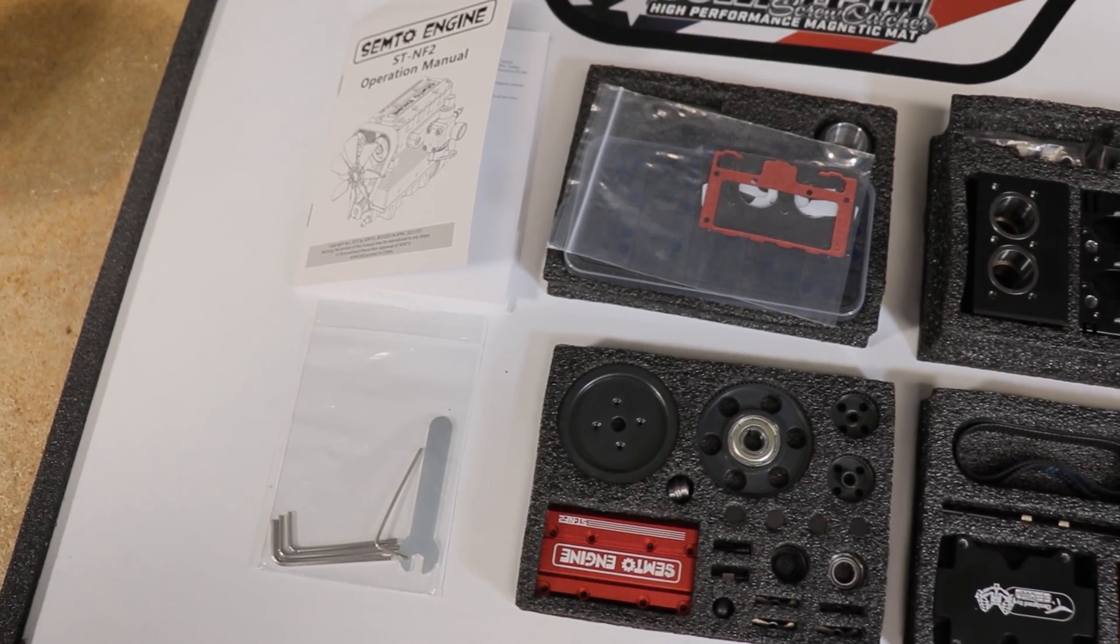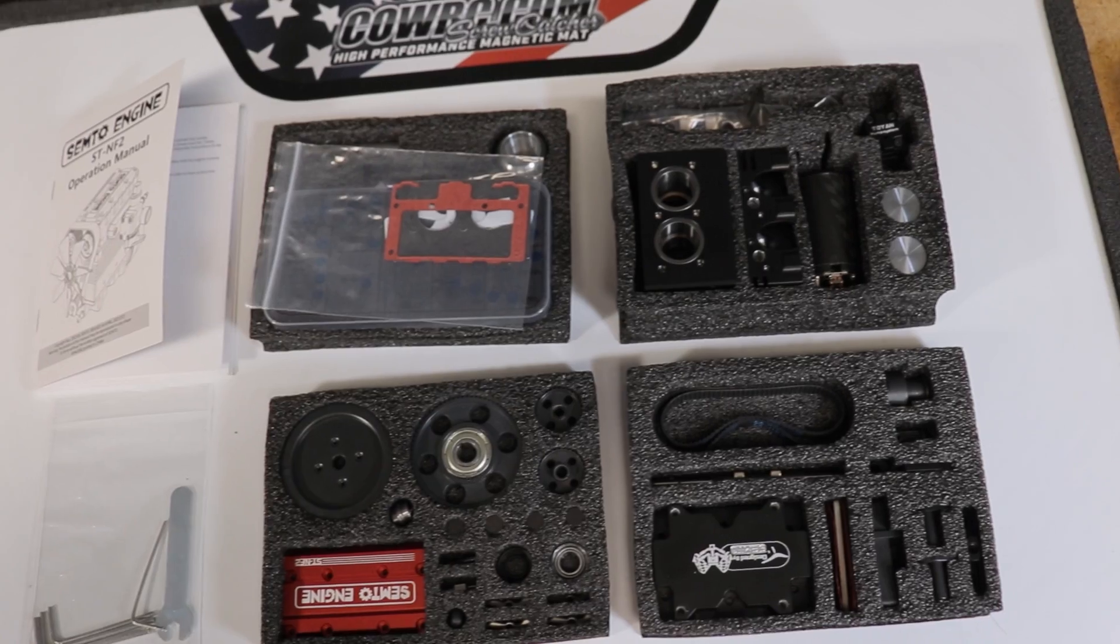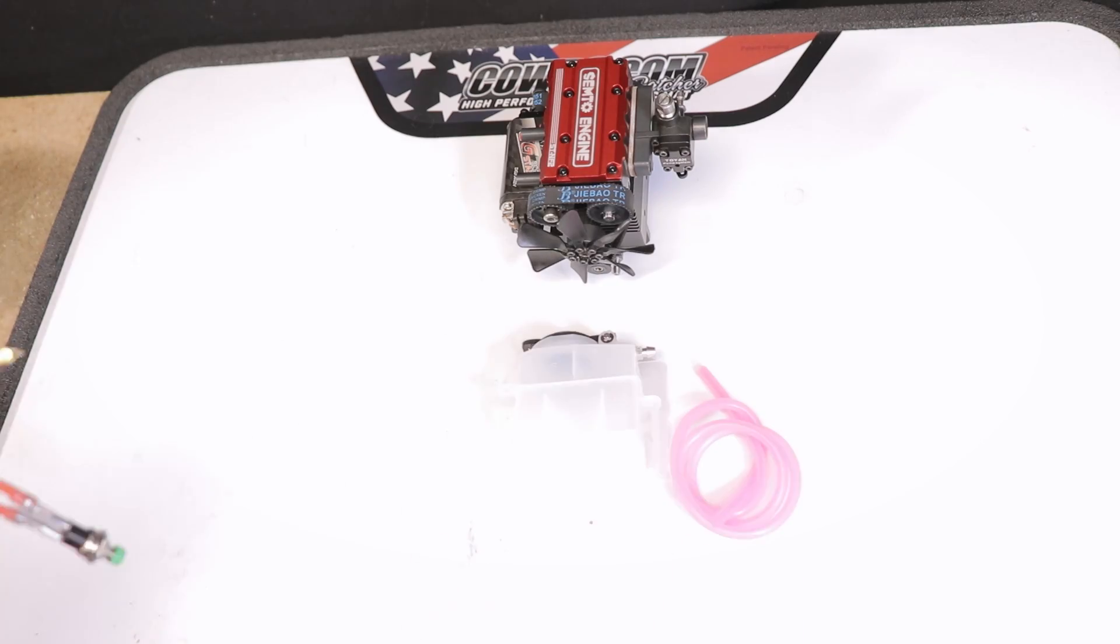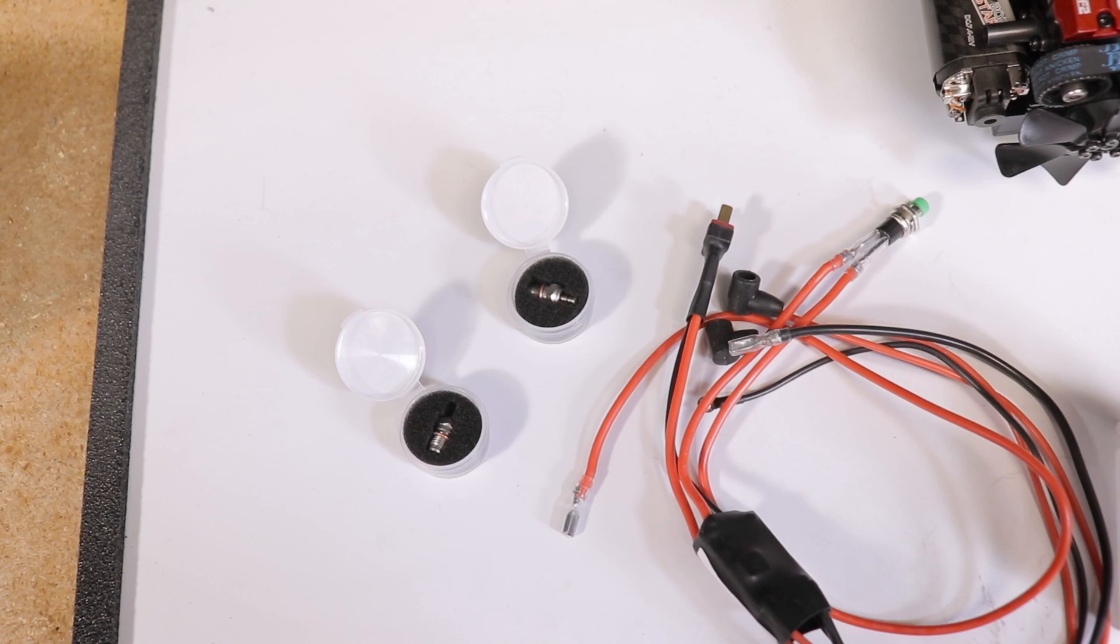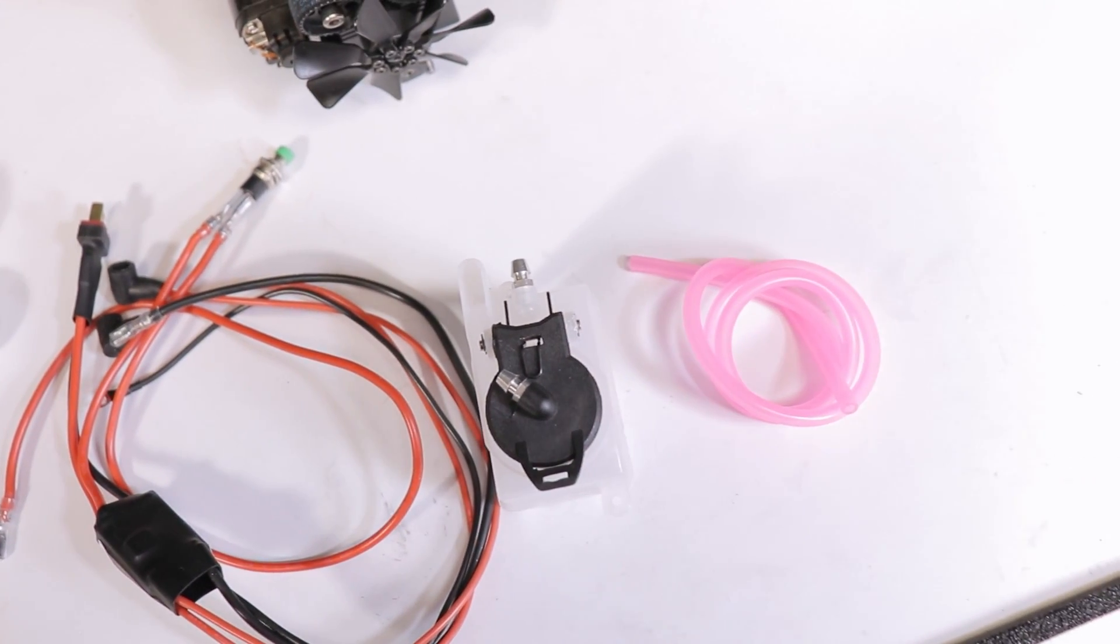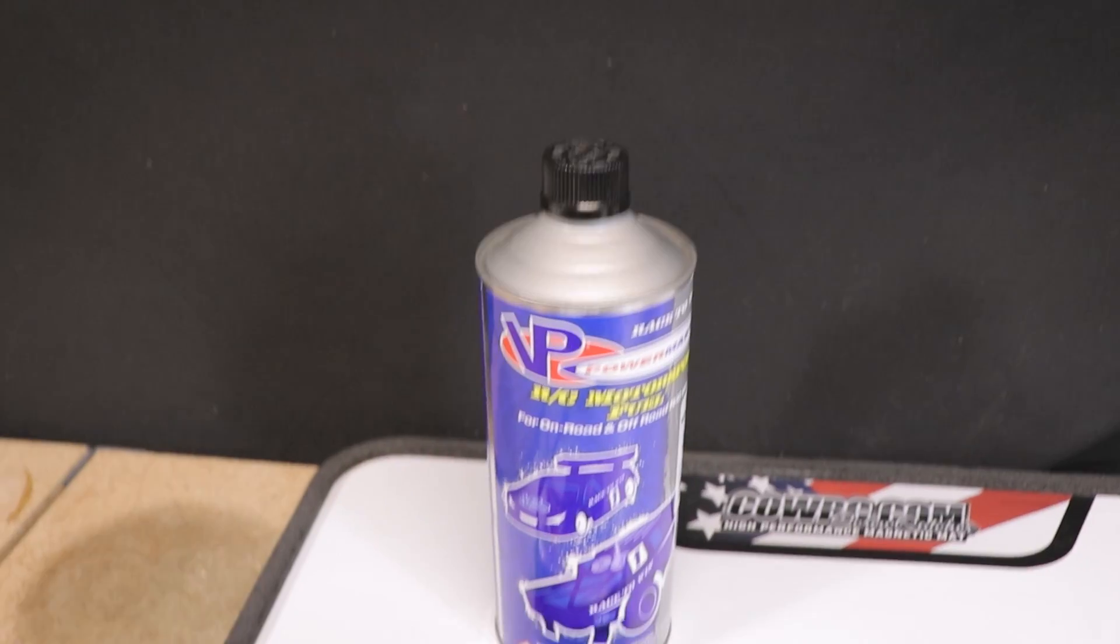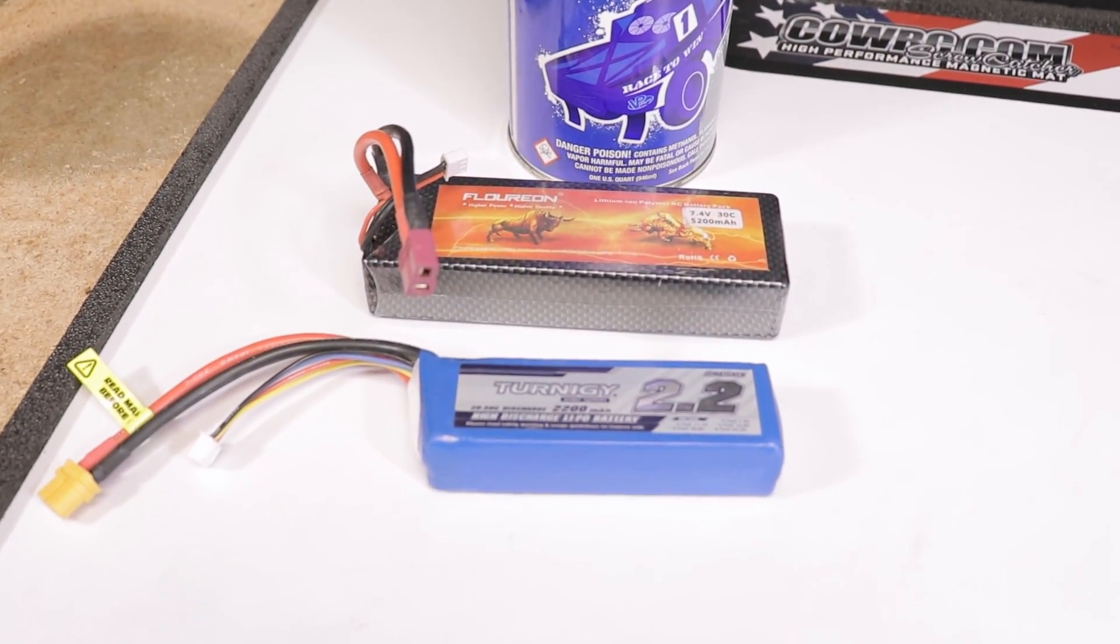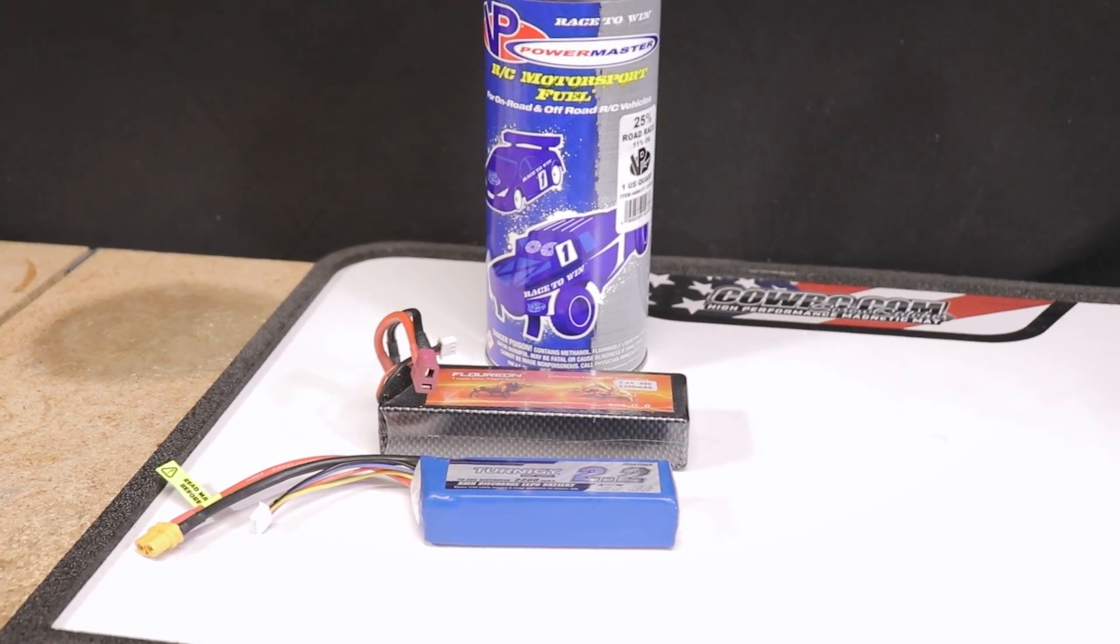This kit includes just about everything you'll need to get your engine up and running. In addition to the Semto engine, Sterling Kits sent me the complete starter kit which also includes the fuel lines, a fuel tank, glow plugs and all of the wiring. The only remaining items that I needed to provide myself were the fuel and the lipo batteries to heat the glow plugs and run the starter motor.